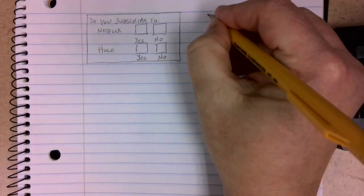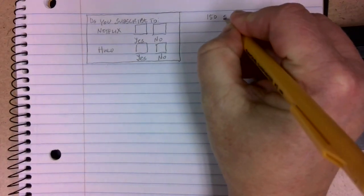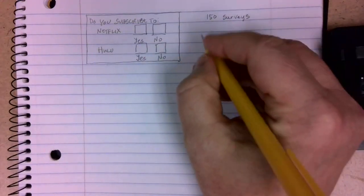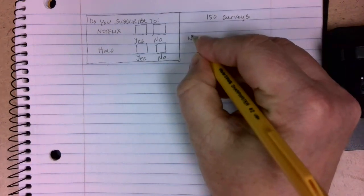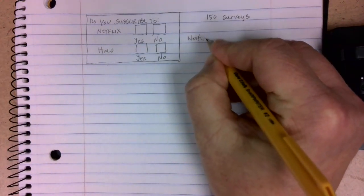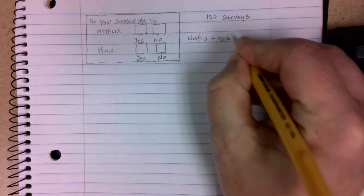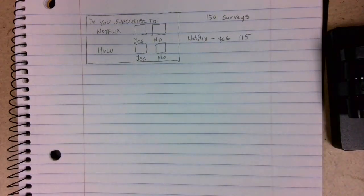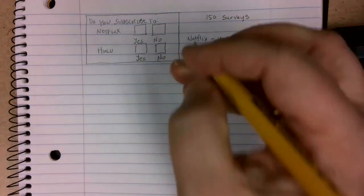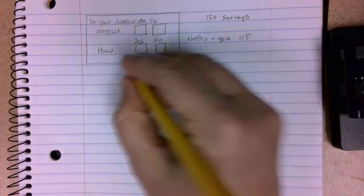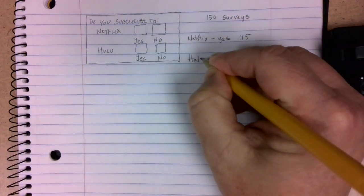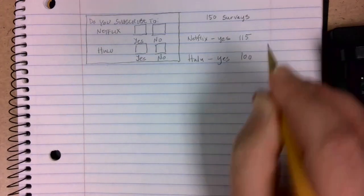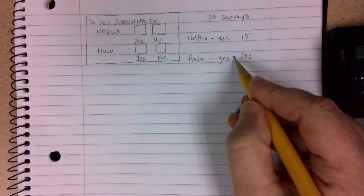Suppose that we give out 150 of these surveys to people and ask them to check whatever boxes apply. After we collect all of them, someone goes through and counts all of the Netflix yes answers. They found that there were 115 people that answered yes, they subscribed to Netflix. When they looked at the Hulu box, there were 100 people that said yes, they subscribed to Hulu.